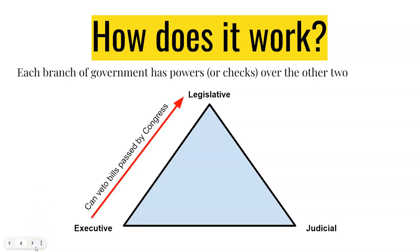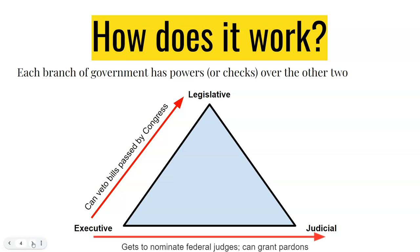So what are some ways that they can limit each other? Let's say Congress passes a bill that they want to be law — the president can veto that bill, and basically that bill will not become law. Or let's say the president wants to change up who is in the federal court system. The president gets to nominate federal judges. They can also grant pardons if they don't like how a court decision was made, saying that person who was guilty is now pardoned.